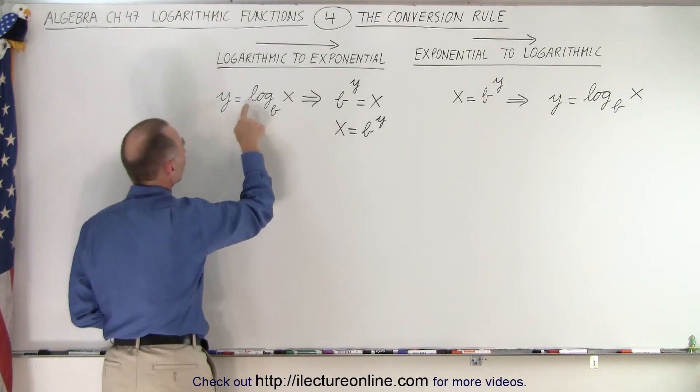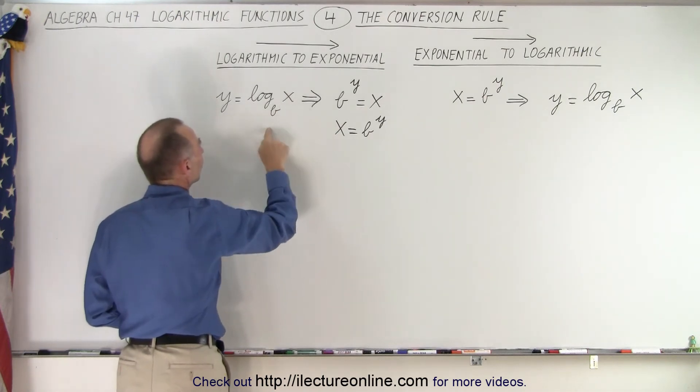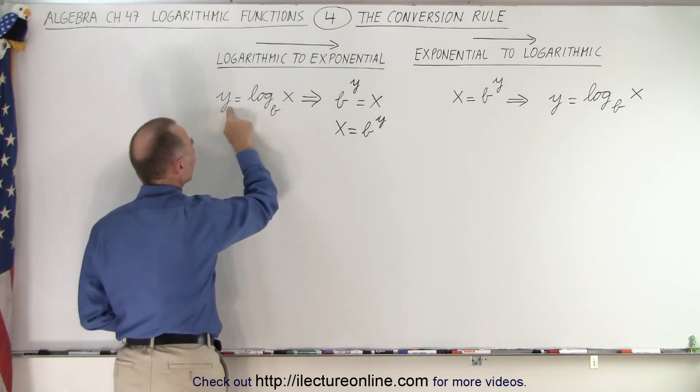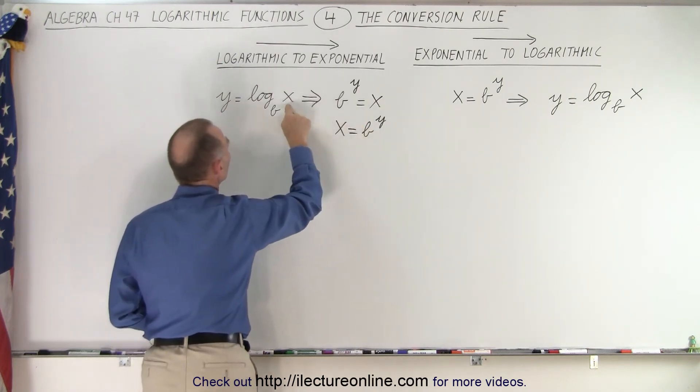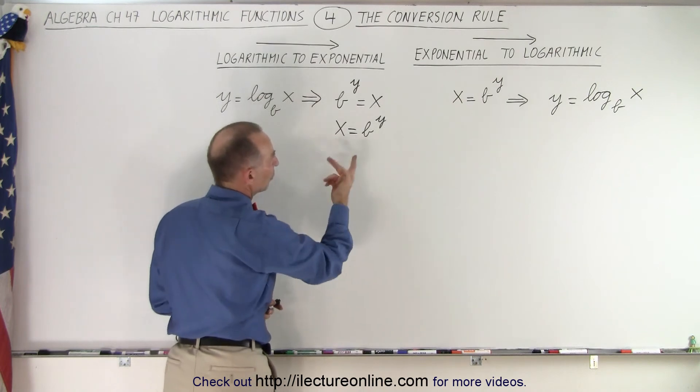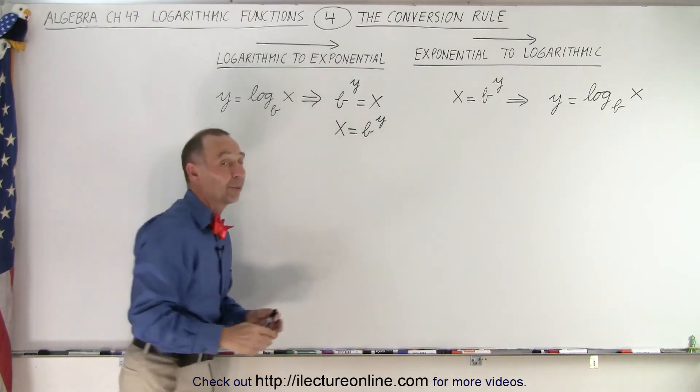Over here we have y equals log base b of x, so we remember that this becomes the exponent. Here's the base, so the base raised to the exponent equals the number that we take the log of. And then we just switch it around to get back what we started with.